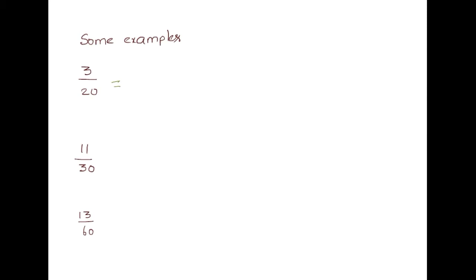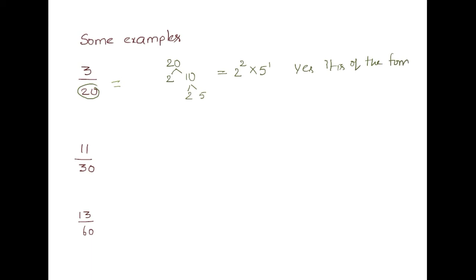Some examples: 3 by 20. The denominator is 20. Prime factors of 20: 2 into 10, 2 into 5, so 2^2 into 5^1. It is of the form 2^m into 5^n. Therefore, 3 by 20 is a terminating decimal — meaning it stops after a certain value.